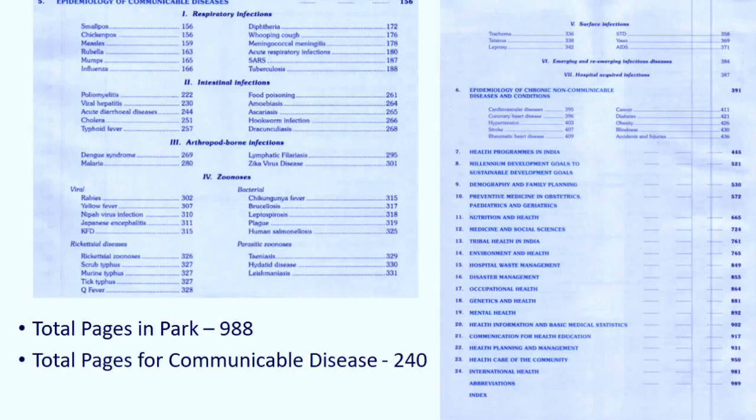Out of the total nearly thousand pages in PARC textbook, 240 pages — that is 25 percentage — is comprised by the Epidemiology of Communicable Disease chapter, which is the fifth chapter in PARC.